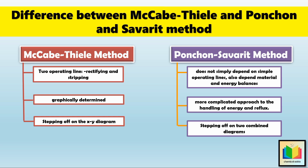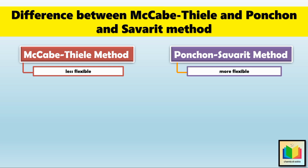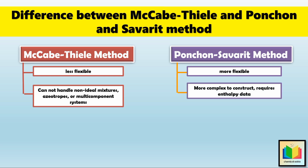Regarding flexibility: the McCabe-Thiele method is less flexible because it is limited to binary mixtures, though it works great for simple systems. The Ponchon-Savarit method is much more flexible because it can handle both binary and multi-component systems, and is suitable for non-ideal mixtures as well. As for limitations: the McCabe-Thiele method cannot handle non-ideal mixtures, azeotropes, or multi-component systems. The Ponchon-Savarit method's limitation is that it is more complex to construct and requires enthalpy data.